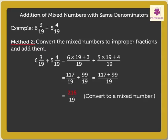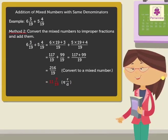Now, to convert 216/19 into a mixed fraction, we divide the numerator 216 by denominator 19. We get quotient 11 and remainder 7. Thus, we get the mixed number 11 and 7/19. Hope you had fun learning addition of mixed numbers